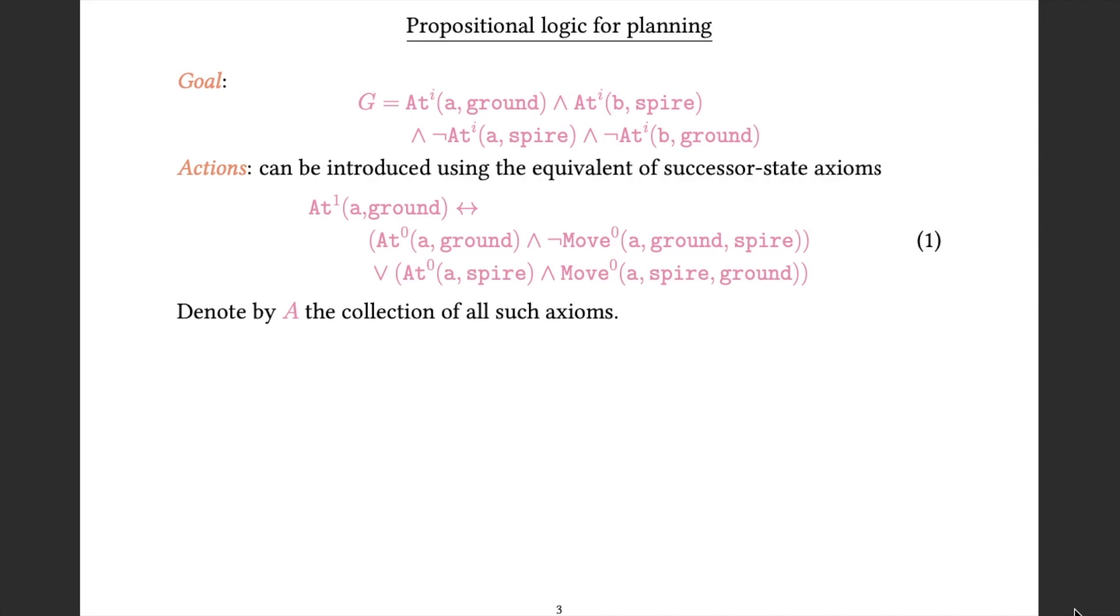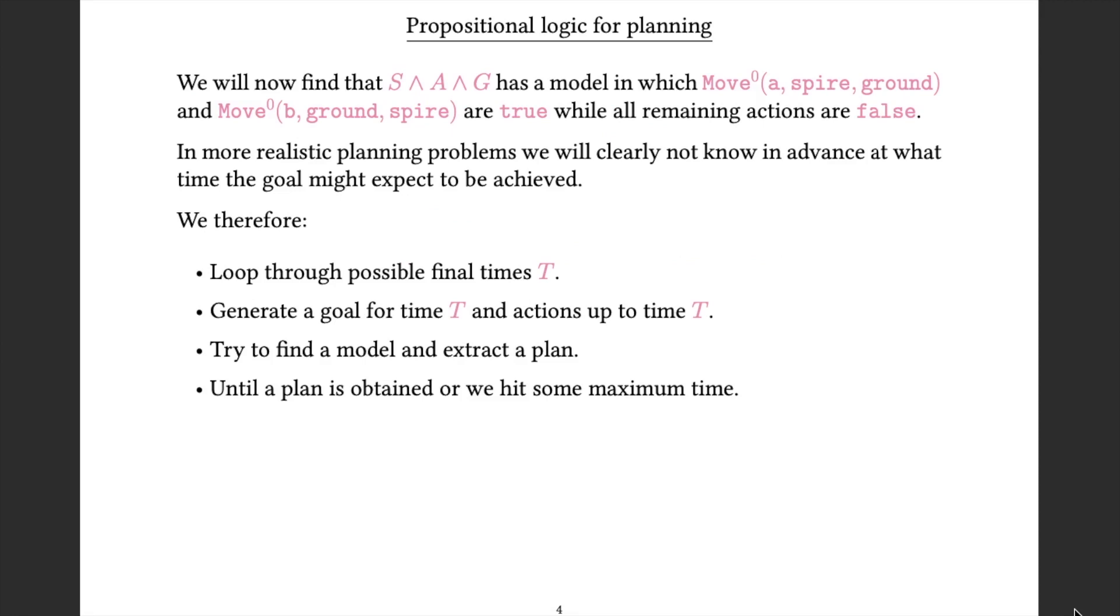Given a planning problem, we can represent the actions in that way, using individual successor state axioms. For this specific problem, if I now form the conjunction of the start state, the successor state axioms for the actions and the goal, I will find that the resulting sentence has a model in which move at step 0 A from the spire to the ground and move at step 0 B from the ground to the spire are both true, while all the remaining actions are assigned to be false.